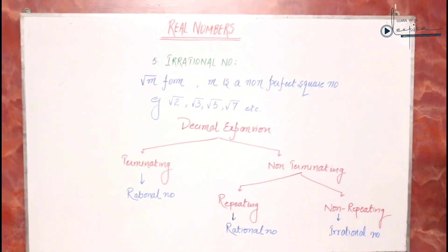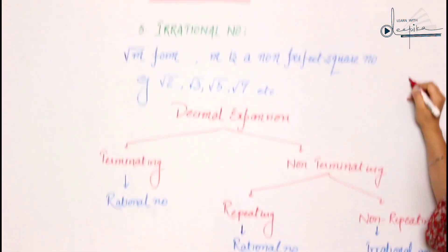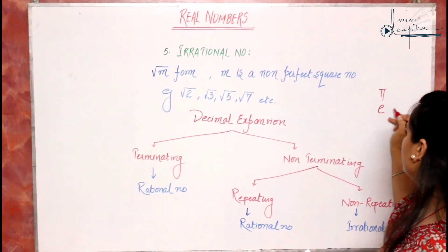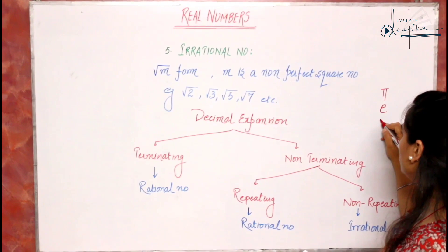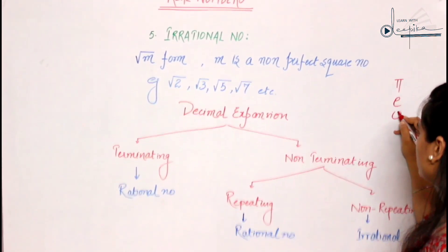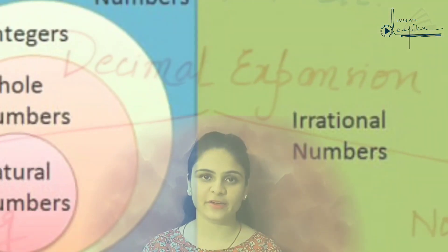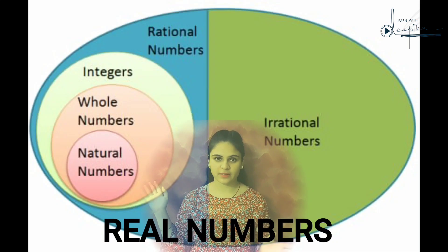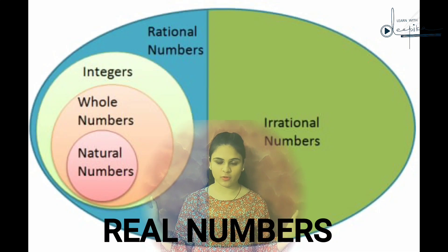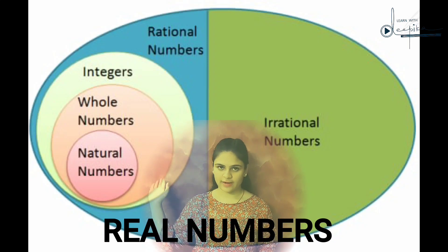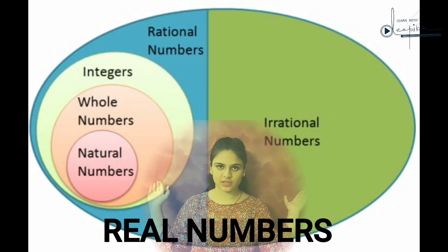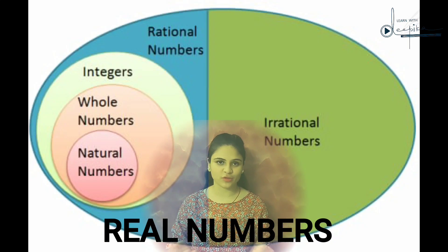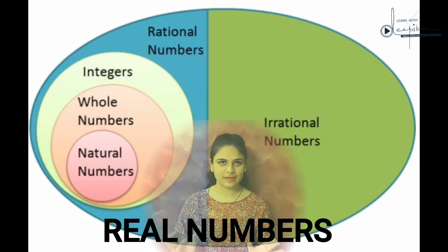A few irrational numbers: one is pi (3.14...), one is Euler's number, and another is the golden ratio. I have explained all the types of numbers represented in Venn diagram form. If you add all rational numbers and all irrational numbers, you get the complete set of real numbers. So this is all about real numbers.